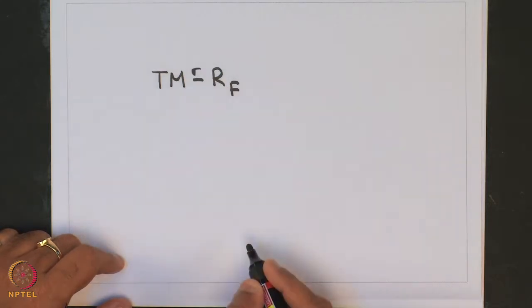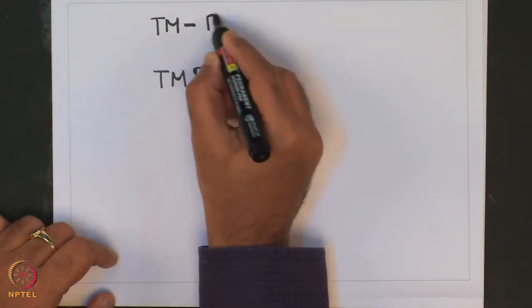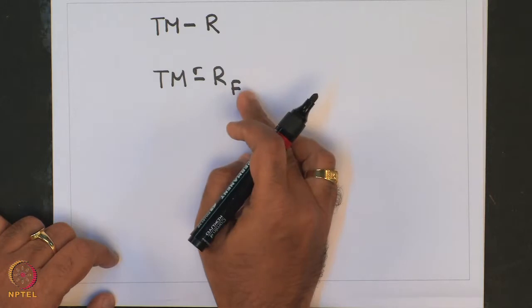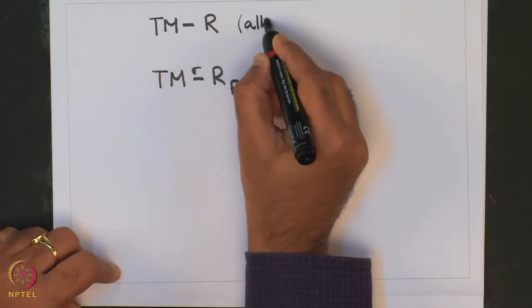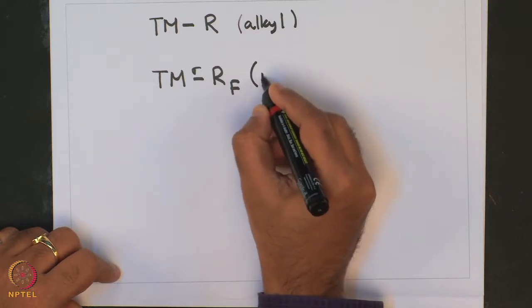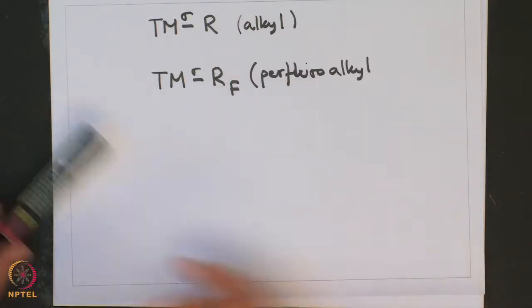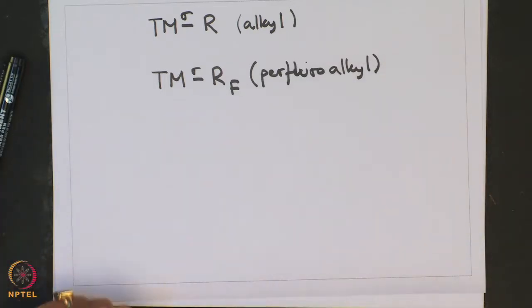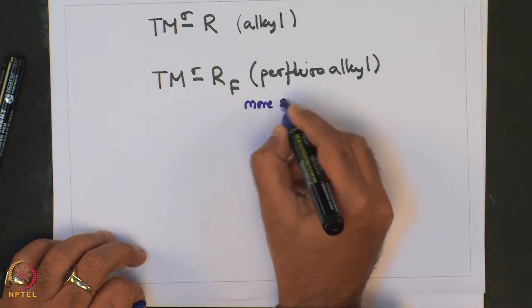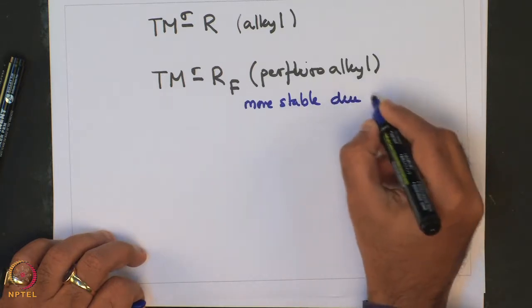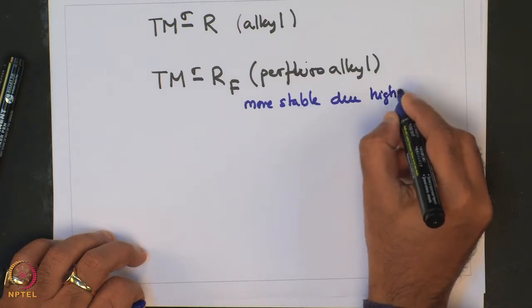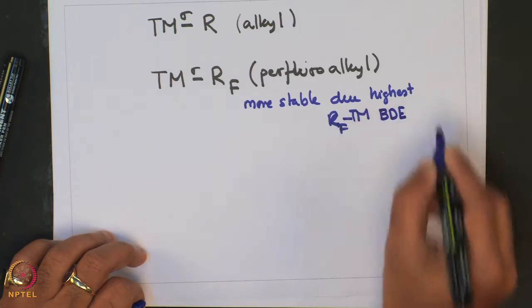These Transition Metal Sigma Perfluoroalkyl type complexes are very stable, as opposed to Transition Metal Sigma Alkyl Complexes which we have also discussed prior. One of the attributes of Transition Metal Perfluoroalkyl Complexes is that they are more stable due to the highest bond energy.